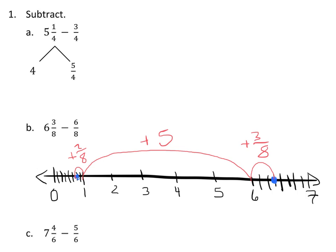All these hops put together is the total space between these two numbers. So I have five, and then I also have two-eighths and three-eighths for five-eighths. So B has been solved. The difference between six and three-eighths and six-eighths is five and five-eighths.